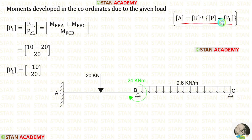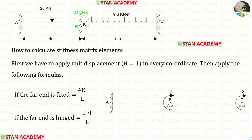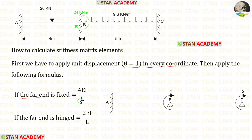Now we are going to find the stiffness matrix. To build the stiffness matrix we apply unit displacement — that is, theta equal to 1 radian — at every coordinate. If the far end is fixed, the formula is 4EI/L. If the far end is hinged, the formula is 3EI/L.